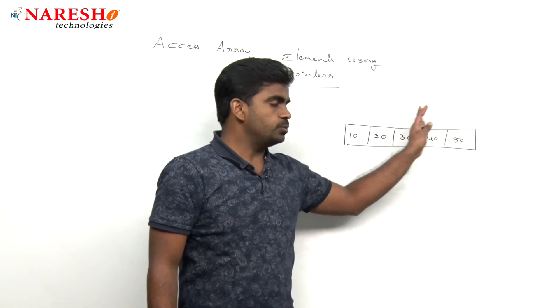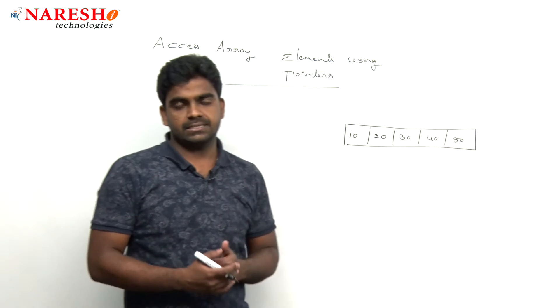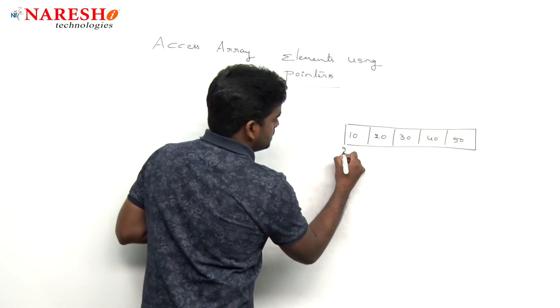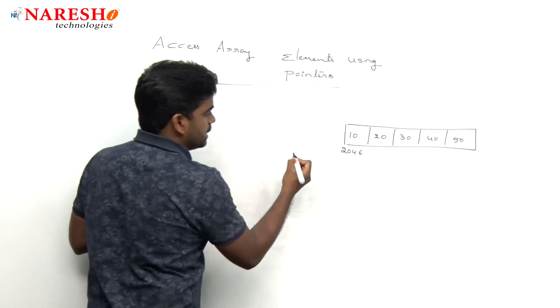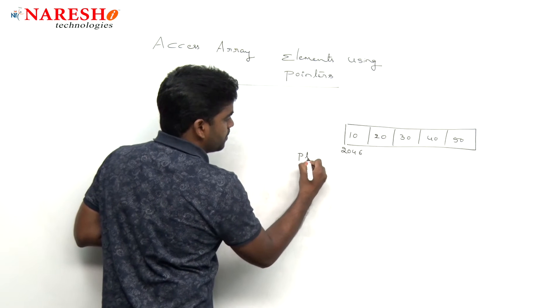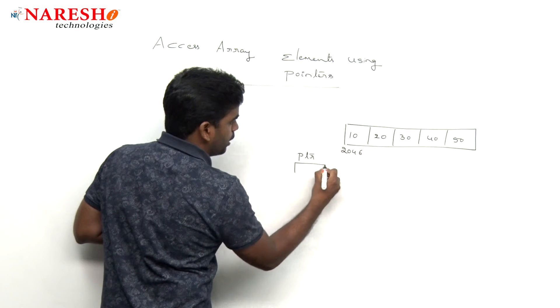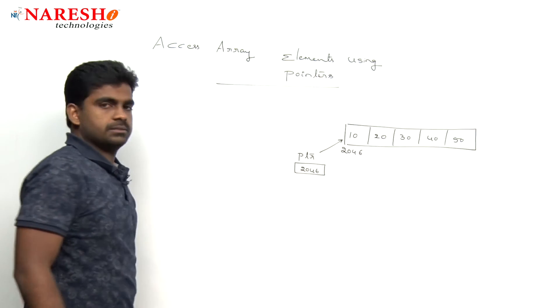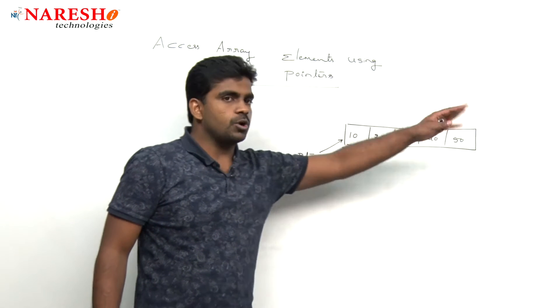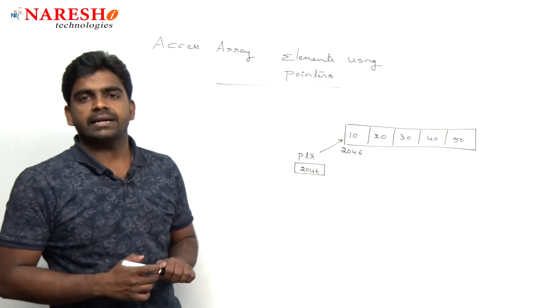Index starts with 0, 1, 2, 3, 4 up to size minus 1. The array variable stores the base address. In the same way, consider we are taking one pointer variable. Now that pointer is pointing to this address, and indexing is not there.